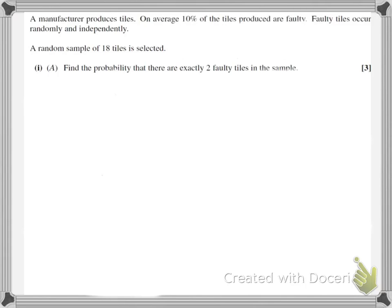Looking at the first part of the question, a random sample of 18 tiles is selected, and we need to find the probability that there are exactly two faulty tiles in the sample. I'm expecting a binomial distribution because of the hypothesis test part of the question later. We've got a sample of n trials — in this case n is 18 — and we have two possible outcomes: the tiles could be faulty or not faulty.